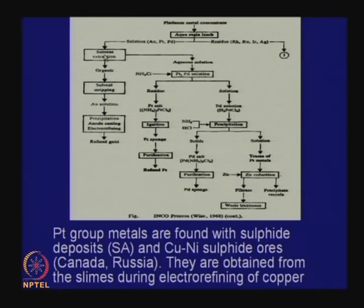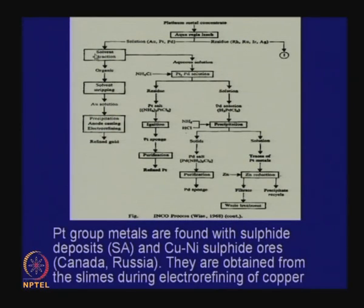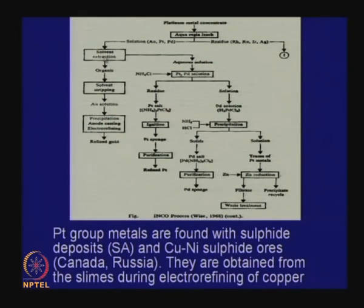After obtaining a solution, we go through solvent extraction. In the organic phase, gold will come in. In the aqueous phase, we will have platinum and palladium. Gold goes into the organic phase; solvent stripping gives a gold solution, which can go for precipitation, anode casting, and electro refining. We get gold from here.